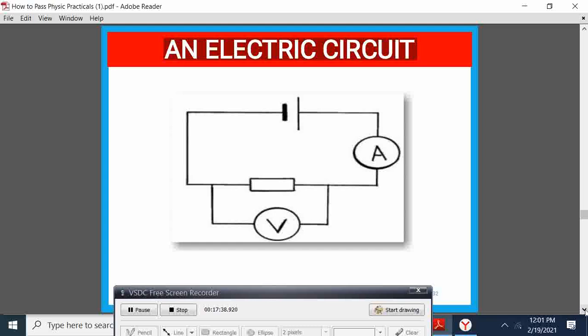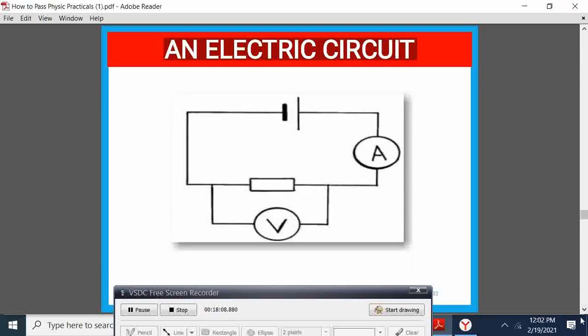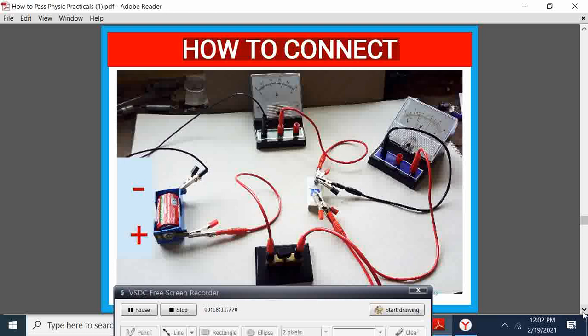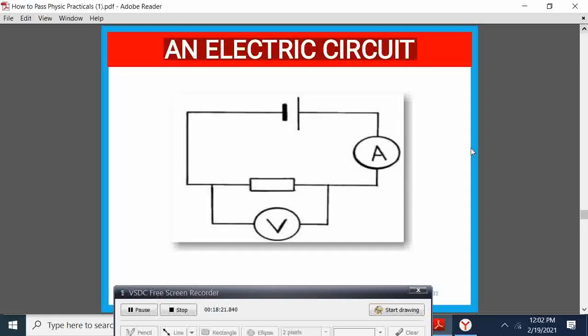Then we have what we call an electric circuit. This is a very simple electric circuit. Somebody may want you to connect. So we have here the ammeter, the voltmeter, and the load. We have also the cells. Whenever we do such a connection, that is the connection from the circuit we have seen. But when you look at this connection, some students find it difficult to come up with this connection. I'm going to highlight on how to do it first.